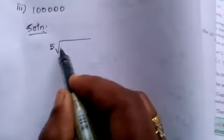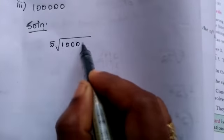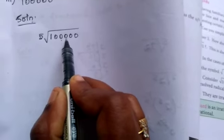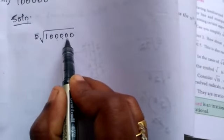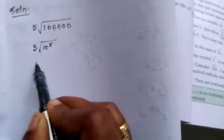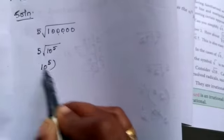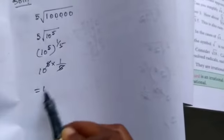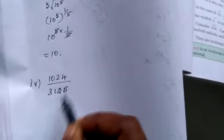Now we are doing the third sum: what is the 5th root of 100,000? Now 100 means 10 squared, 1000 means 10 cubed, 10,000 means 10 power 4, and 100,000 means 10 power 5. So the 5th root of 10 power 5 — we write 10 power 5 into 1 by 5, the 5 cancels, and the answer is 10.